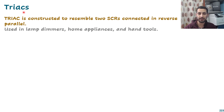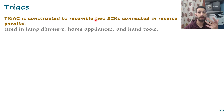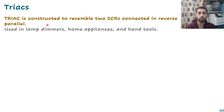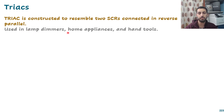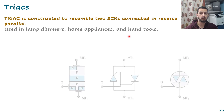Today we are going to talk about another component: the triac. The triac is constructed to resemble two SCRs — two thyristors placed backwards — and that gives us the option to control the amount of current in both directions. It is very popular and used in lamp dimmers, home appliances, and hand tools.